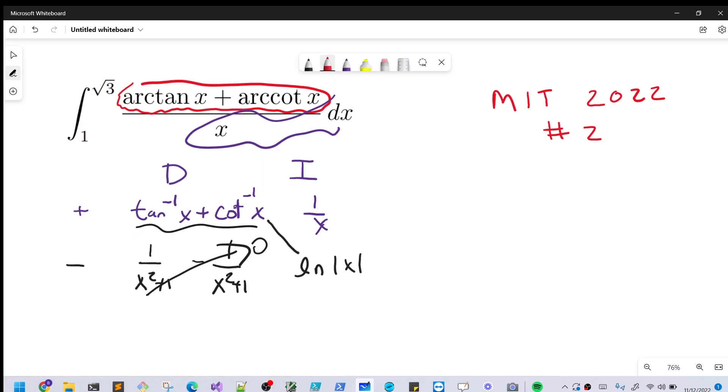Okay, then taking this diagonal, let's evaluate this expression. So we're going to have tan inverse x plus cotangent inverse x, then ln absolute value x, and we're evaluating from square root of three to one.